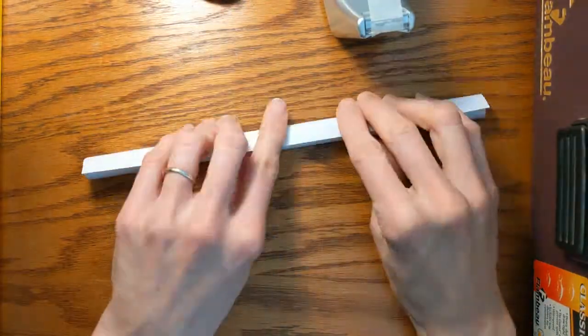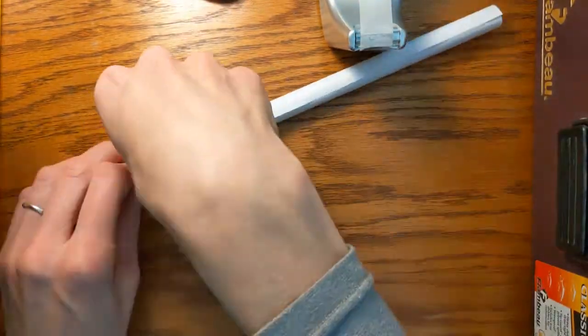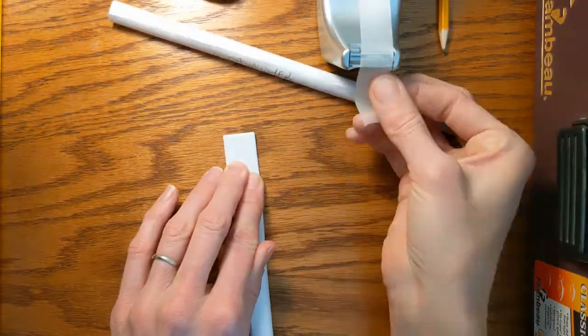Make a second rocket the same way. Roll a piece of paper around the launcher and tape it and then tape the top shut, but this time we're going to add some fins.